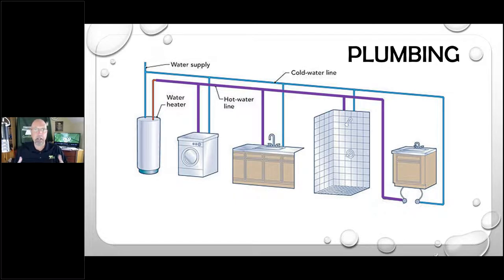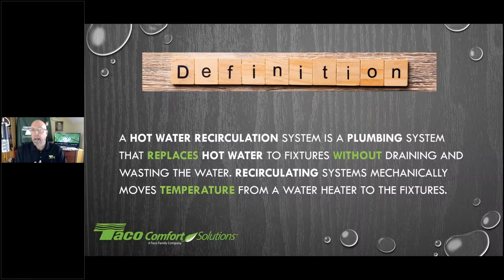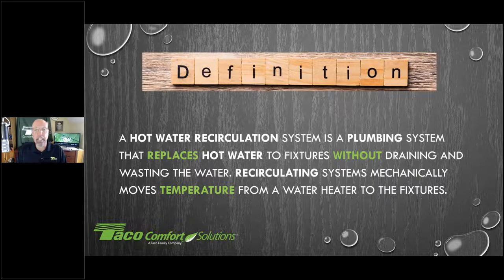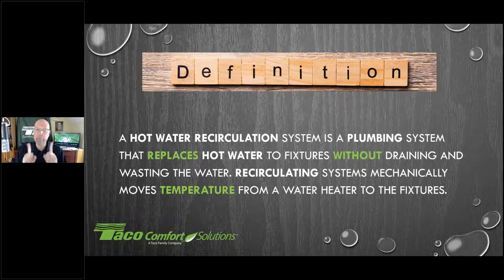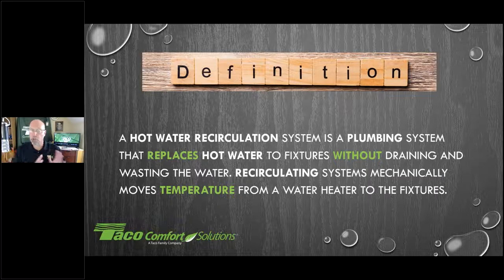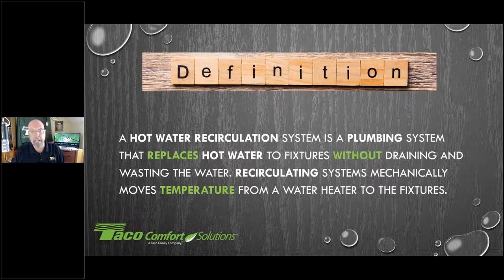The larger the home, the worse it gets. The bigger the pipe, the worse it gets. But it hasn't always been that way — we haven't always had to wait for hot water. Domestic hot water recirculation is a plumbing system that replaces hot water to fixtures without draining and wasting water. A recirculation system mechanically moves temperature from the water heater to the fixtures. We don't need to move a serious amount of hot water in a residential setting — we just trickle water through, really just pumping temperature. This week's class is defining what hot water recirculation is and the different ways we can install and control a hot water recirc system.